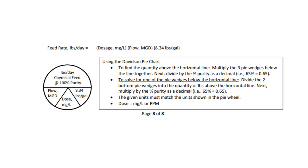Here we have the pounds formula, also known as the Davidson pie chart. In the Davidson pie chart, you have pounds per day of chemical feed, 100% purity, flow in MGD, dose in milligrams per liter, and the standard of 8.34 pounds per gallon. We're going to be solving for dose milligrams per liter in this video.